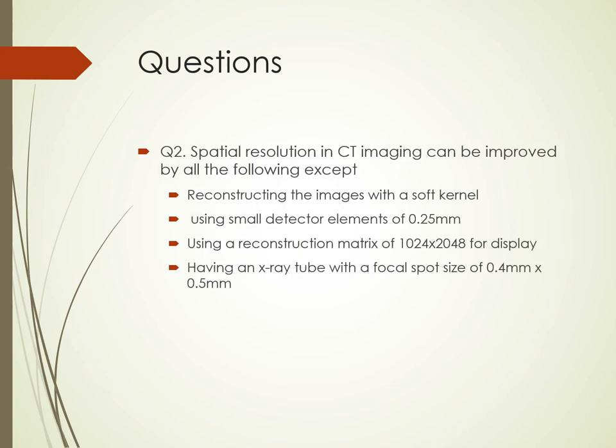Next question: Spatial resolution in CT imaging can be improved by all of the following except — reconstructing the images with a soft kernel, using small detector elements of 0.25 mm, using a reconstruction matrix of 1024 by 2048 for display, or having an X-ray tube with a focal spot size of 0.4 mm by 0.5 mm. The correct answer is the first choice — reconstructing the images with a soft kernel will not improve spatial resolution.